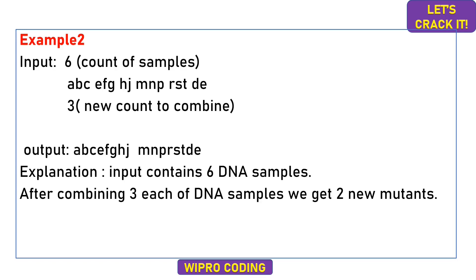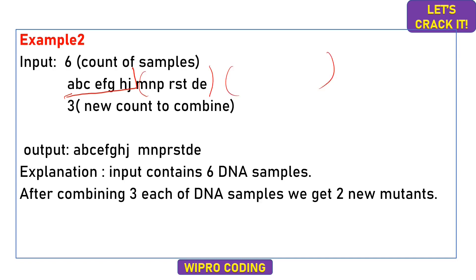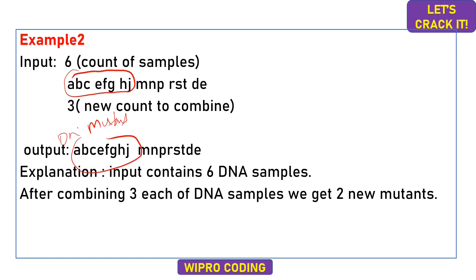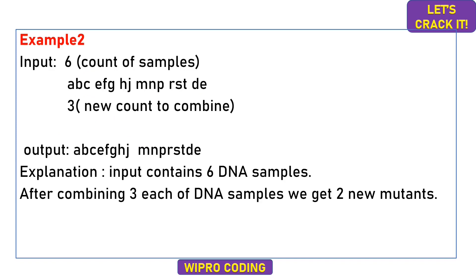For example two, the input count is six, followed by six space-separated DNA samples — ABC is the first, and so on up to the sixth. The count to combine is three, meaning every three samples are combined. So the first three samples combine into one mutant, the next three into another. The output prints the two new DNA mutants, each formed by combining three samples.